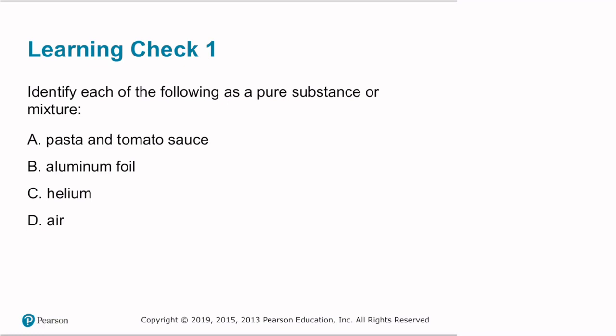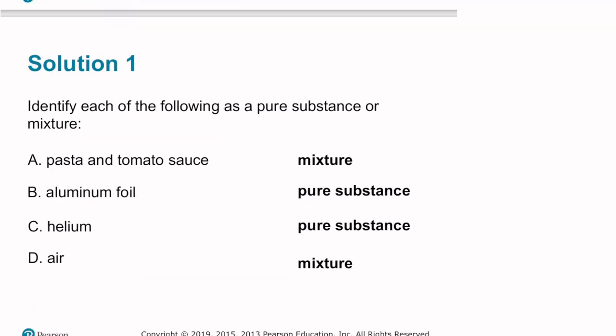Let's identify each of the following as a pure substance or a mixture: pasta and tomato sauce, aluminum foil, helium, and air. Pasta and tomato sauce is a mixture. Aluminum foil, made only of aluminum, is a pure substance. Helium is an atom, it's an atomic species, and that is a pure substance. Air is a mixture of gases like nitrogen, oxygen, and maybe argon and carbon dioxide, and therefore it is a mixture.